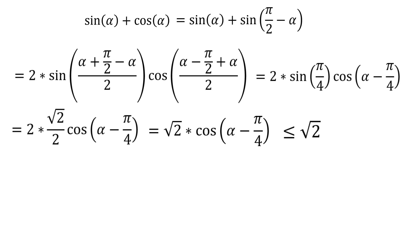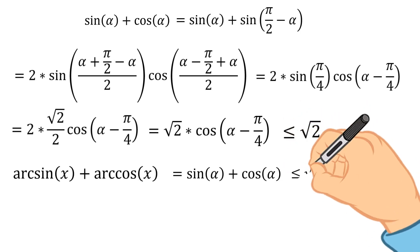Thus, our sum of arc sine and arc cosine can be written as the following, and according to our derivations, it should be less than the square root of 2.